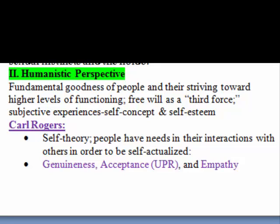Our first theorist is Carl Rogers, who believed that people are innately good. He talked about the importance of their interactions with others, saying that in those interactions they needed to be genuine, accepting, and empathetic. A key term related to acceptance is unconditional positive regard — an important one to know — meaning there are no conditions to somebody's love or acceptance for you.